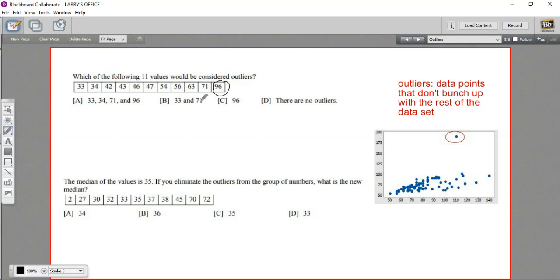Definitely the 33 and the 71 wouldn't be the case. If you're going to choose outliers, you'd want 96 in there. These would be too many, I think. So I'm going to choose 96 here.